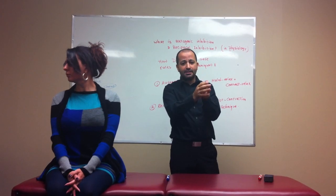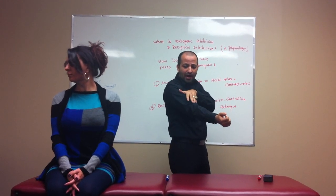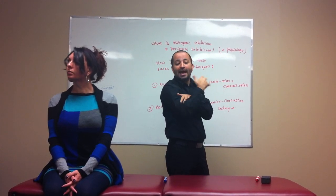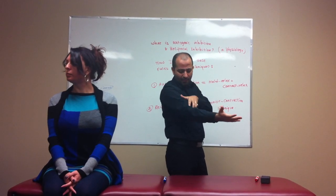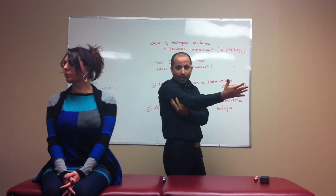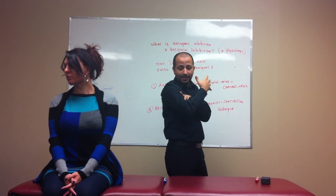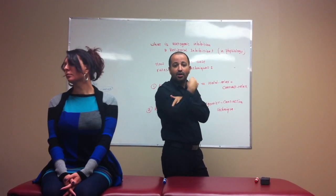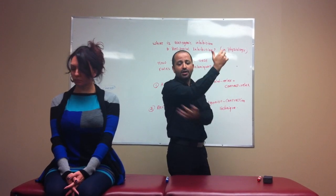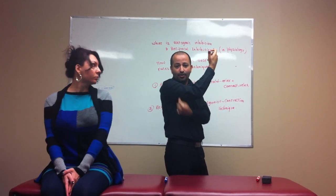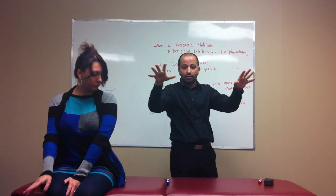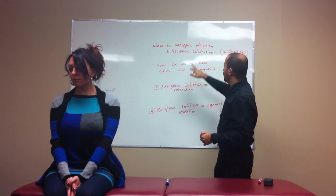Reciprocal inhibition means that any time I contract one muscle, the opposite muscle at the same time will relax to allow that movement to happen. So if I want to contract my biceps, at the same time my triceps will relax. This is a physiological effect — it's not a massage therapy technique. One muscle contracts, the other muscle gets relaxed. That antagonist muscle is inhibited. That's why we call it reciprocal inhibition.